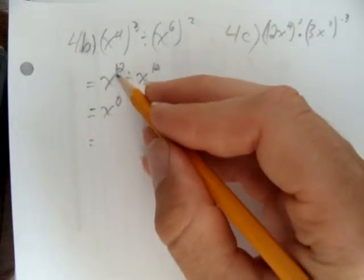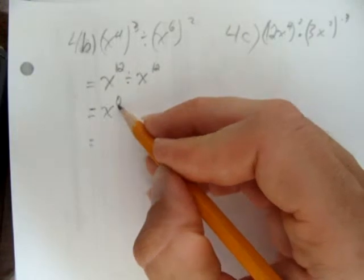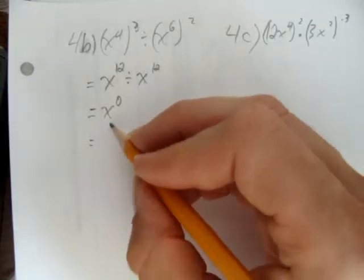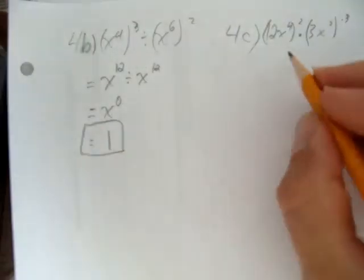You get x to the power of 0. That is, I just subtracted the exponents because I was dividing by the same base and got x to the power of 0. And please remember, anything to the power of 0 is 1. That's my answer for 4b.